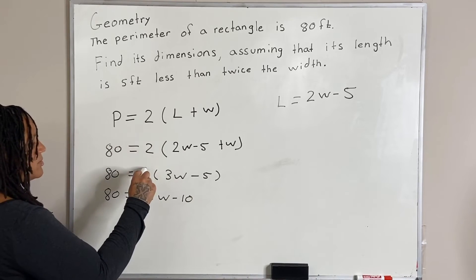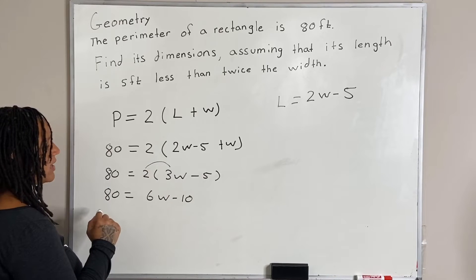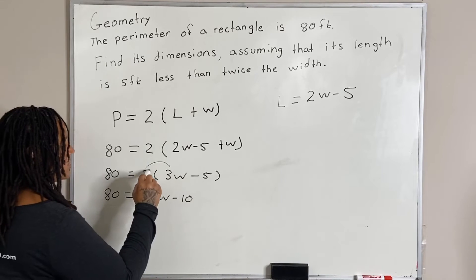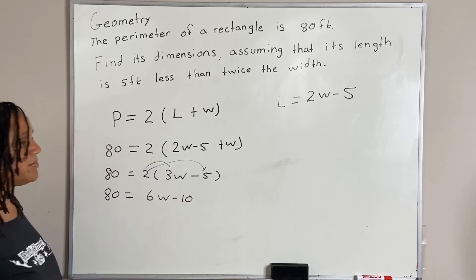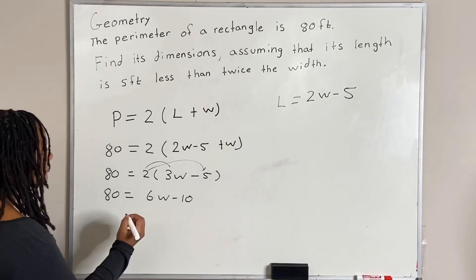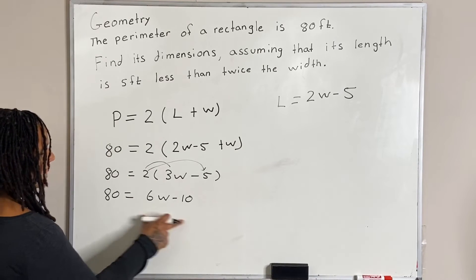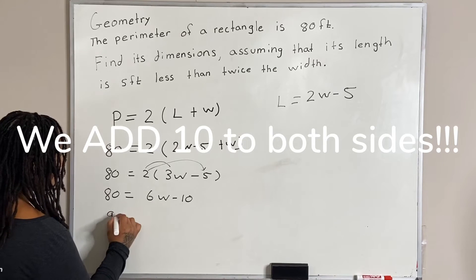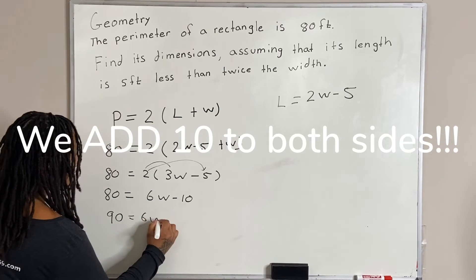So the distributive property says we multiply those two numbers and those two numbers together. So now we're going to subtract 10 from both sides. So we get 90 is equal to 6w.